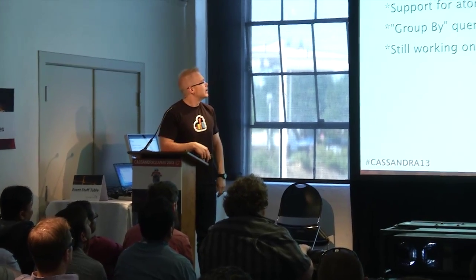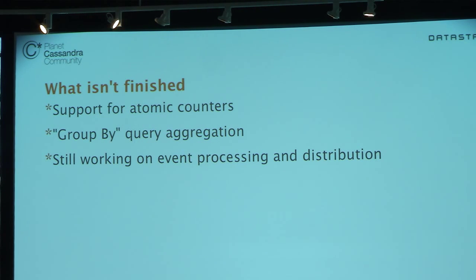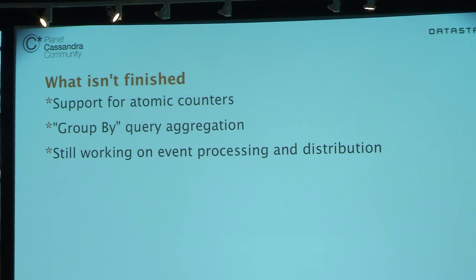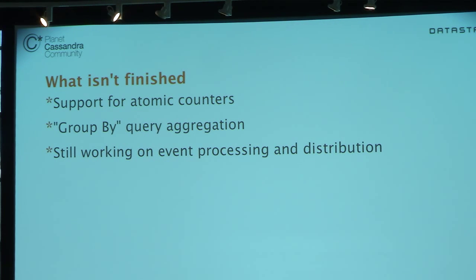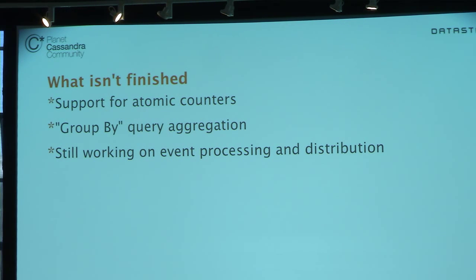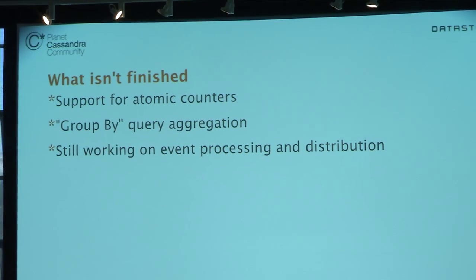What isn't finished yet — but will be done in version one, due to go limited-live by the end of this month — includes support for atomic counters, so I'll be able to index counter fields you're storing in Cassandra; group-by query aggregation for cohort analysis or funnel reports for revenue based on ad campaign hits; and we're still working on some of the event processing and distribution. I just came from the Riak core people, and we were hashing out how to do some of this stuff. This is all active development — everything will be in place for version one.